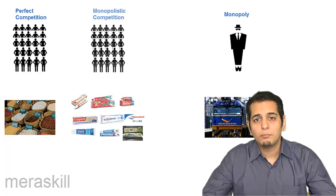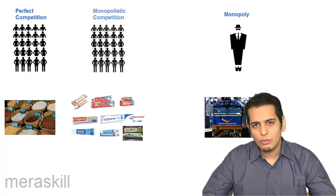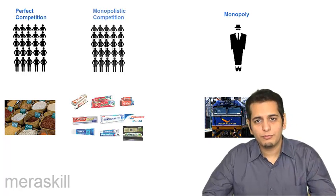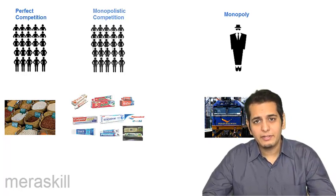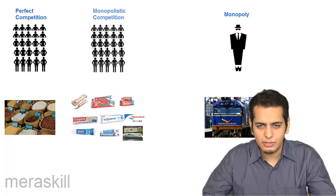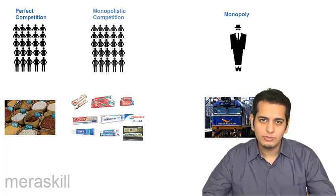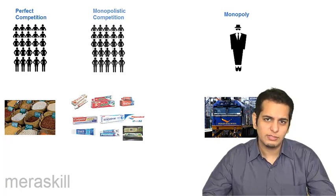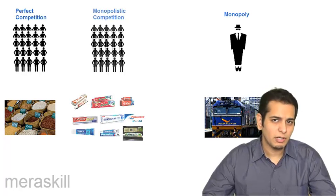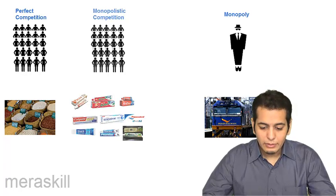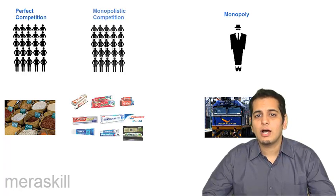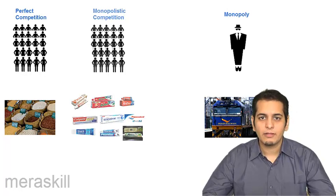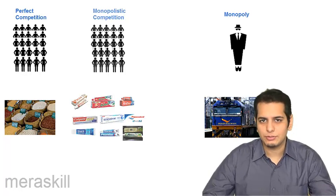Next is monopolistic competition. This is almost similar to perfect competition, and that is why we've placed it near perfect competition. Again, in this case there are innumerable buyers and sellers. The only difference is the product — in perfect competition the product is homogeneous, meaning all the goods being sold in the market are the same.